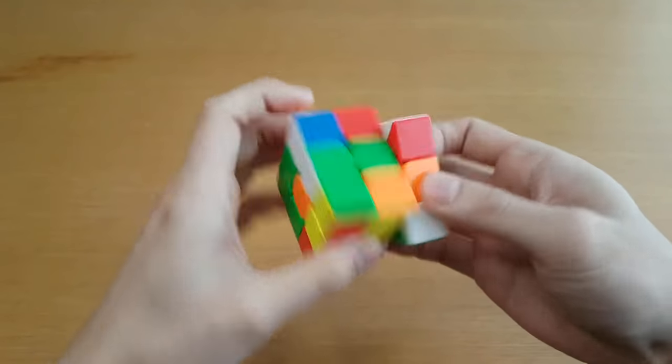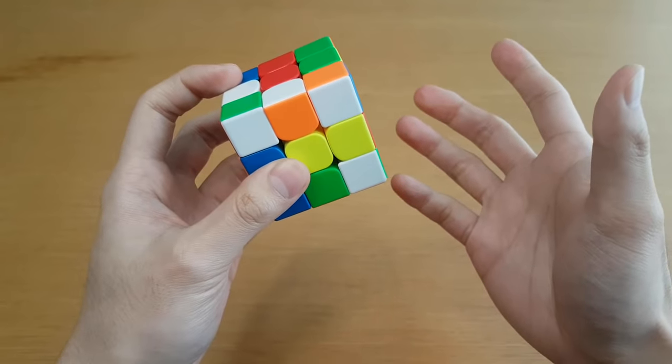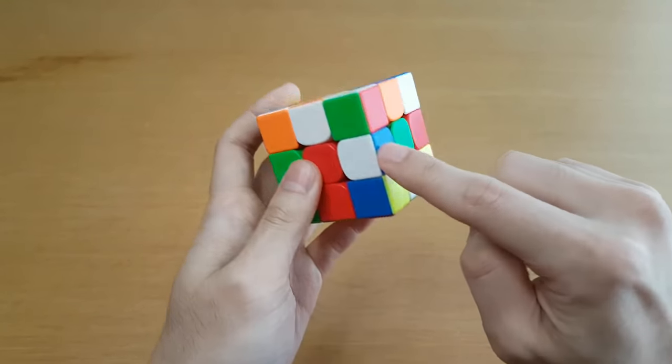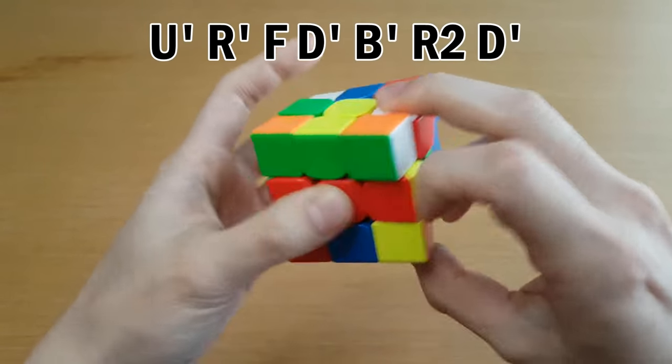When I do solve critiques, this is one of the number one mistakes that I notice people are making, even very good cubers. After using your inspection time to find all the cross pieces and determine a solution for them, you should execute the solution as fast as you can.